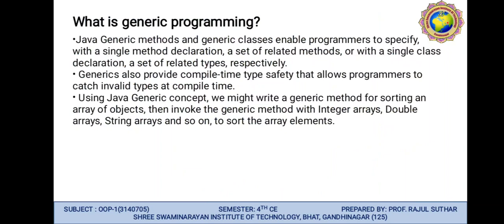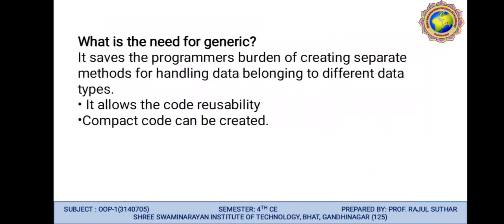A generic method for sorting an array object can be invoked with an Integer array, Double array, String array, and so on to sort the array. Java provides the facility to declare generic classes and generic methods, which provide a useful mechanism to declare methods, classes, and interfaces suitable for similar types of elements. Generics save the programmer the burden of creating separate methods for handling data belonging to different data types. It allows code reusability and compact code can be created.